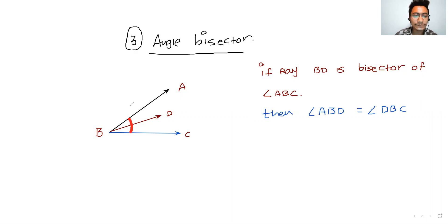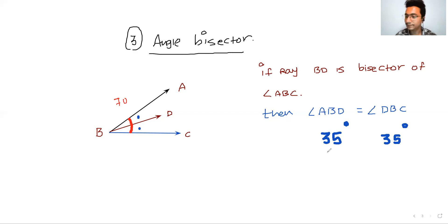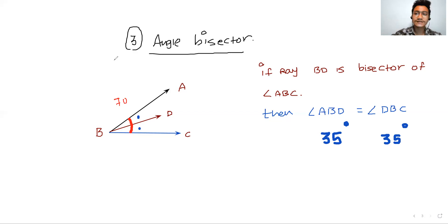For example, if this full angle is 70 degrees, and the bisect word is used, then both parts become equal — divided equally. So if the full angle is 70 degrees, then each part becomes 35 degrees, and this one also becomes 35 degrees. Clear? I hope I have explained all three properties well. If you liked the video, please like it and share it with as many friends as possible. Thank you so much, guys.